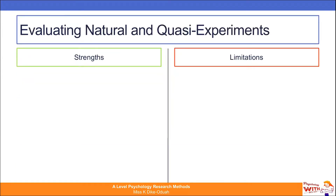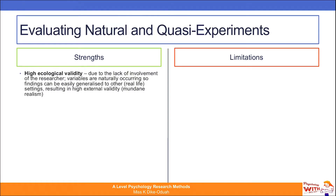To evaluate natural and quasi experiments, we'll look at the strengths first. The first strength is that both are high in ecological validity. Due to the lack of involvement of the researcher, variables are naturally occurring, so findings can be easily generalised to other real-life settings, resulting in high external validity and also mundane realism.